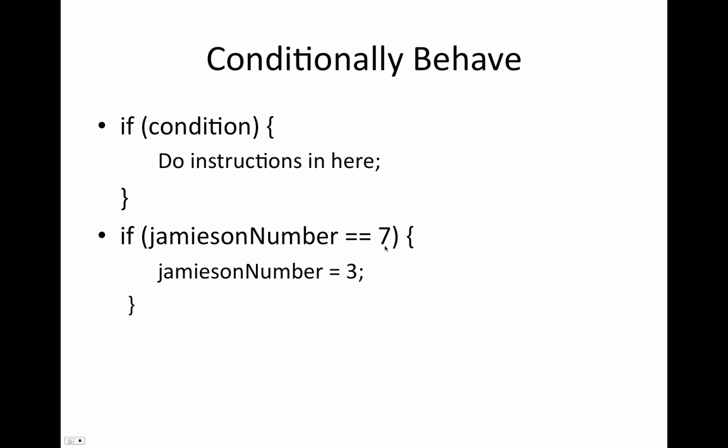So if Jameson number is equal to seven, then we'll set Jameson number equal to three. So all of the stuff inside of these curly brackets gets done if the condition inside of these parentheses is met. And at the end of every statement in code, you're going to put a semicolon. So that's at the end of every line, you put a semicolon and hit return. It helps the computer understand when statements are done.